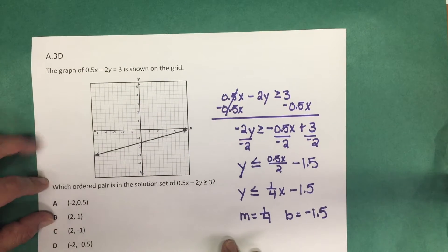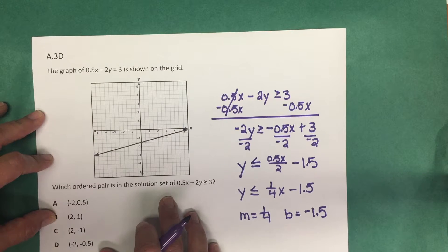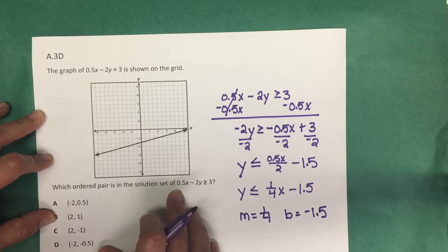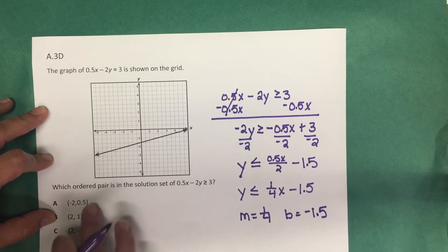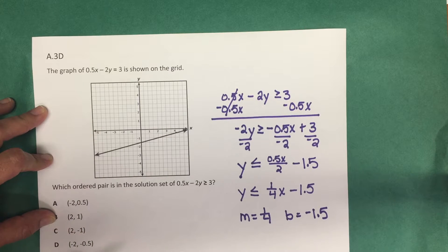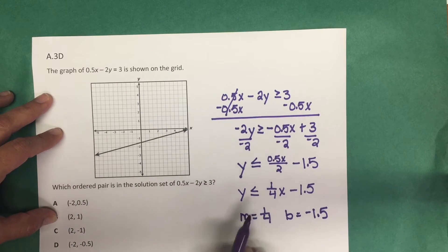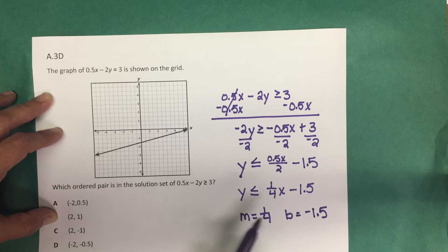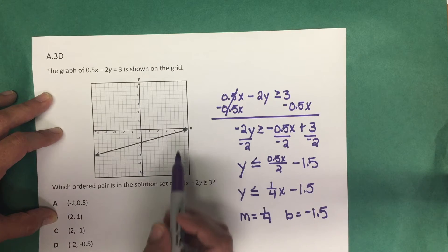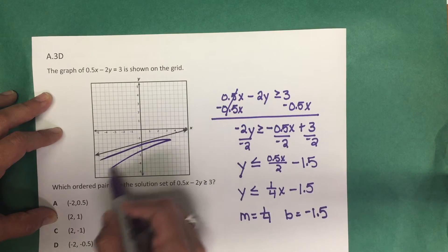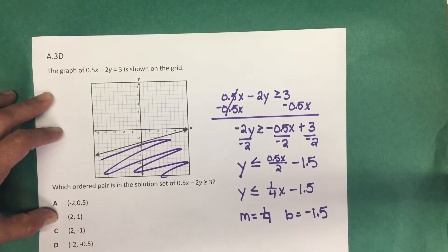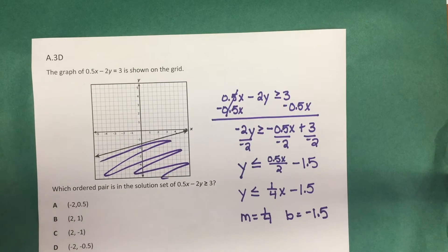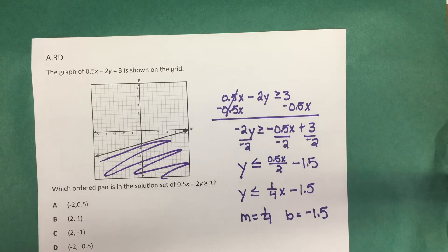Now the question asks which ordered pair is in the solution set of 0.5x minus 2y greater than or equal to 3 — that is, which of these points lies in the shaded area of the graph. Since we rewrote this in slope-intercept form as less than or equal to, we shade below the line with a solid line.